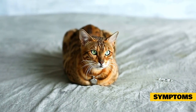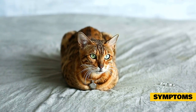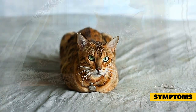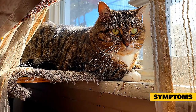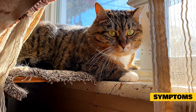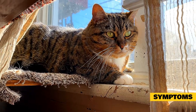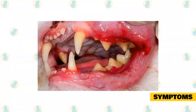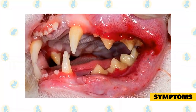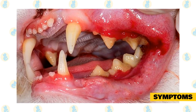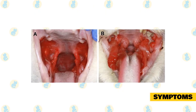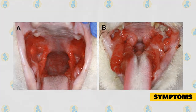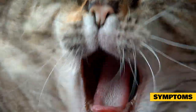Feline stomatitis has been known by many names and most recently is called feline chronic gingivostomatitis, or FCGS. FCGS affects about 0.7 to 4% of cats and is a very painful, often debilitating chronic condition. Two forms are recognized based on the location of inflammation: the first involves the gums and tissues surrounding the teeth (the periodontum); the second, called caudal stomatitis, involves the back of the mouth where the upper and lower jaws come together, known as the fossae. Caudal stomatitis may be more challenging to treat.